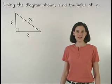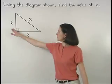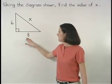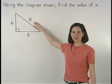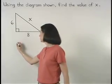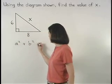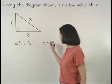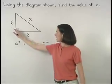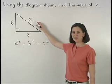The Pythagorean Theorem states that the sum of the squares of the lengths of the legs of a right triangle is equal to the square of the length of the hypotenuse, or a squared plus b squared equals c squared, where a and b are the legs of the right triangle and c is the hypotenuse.